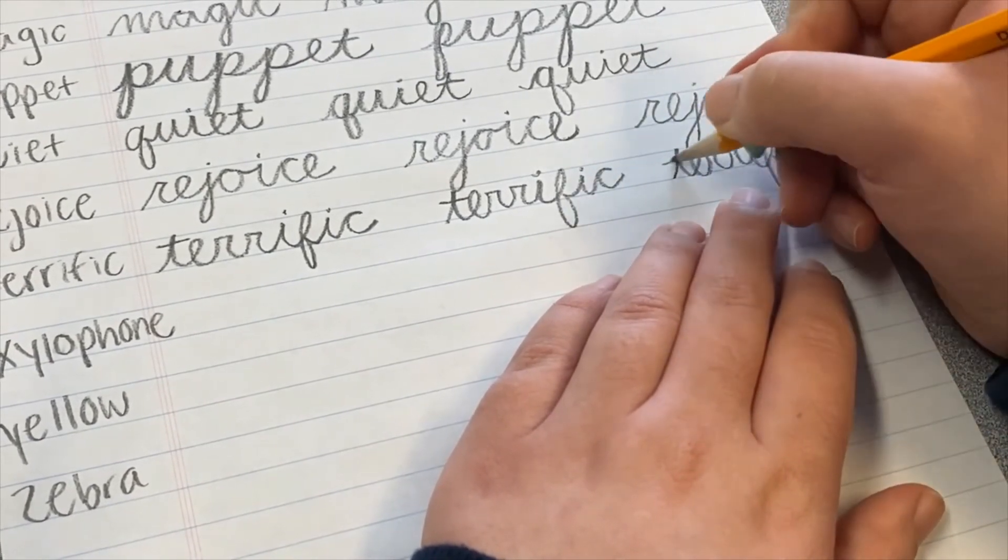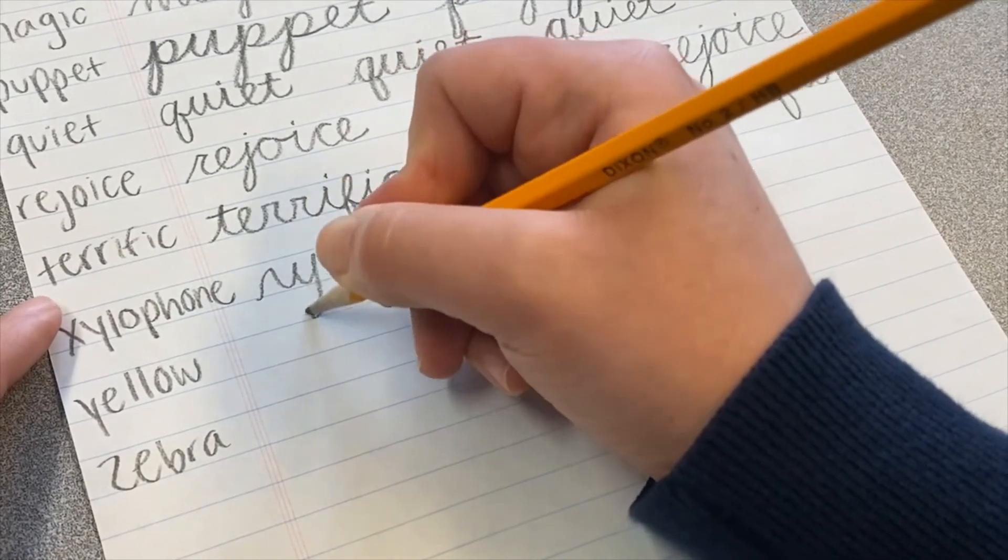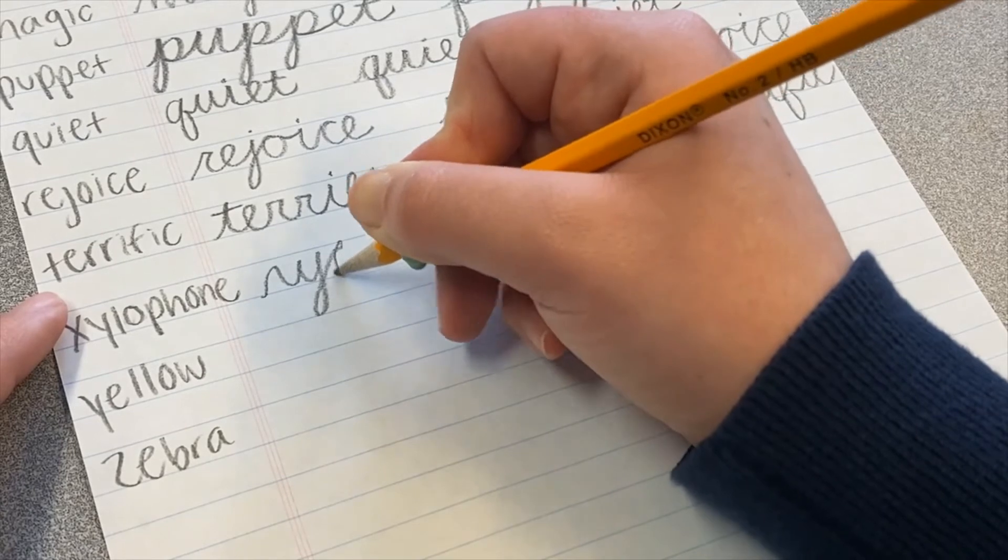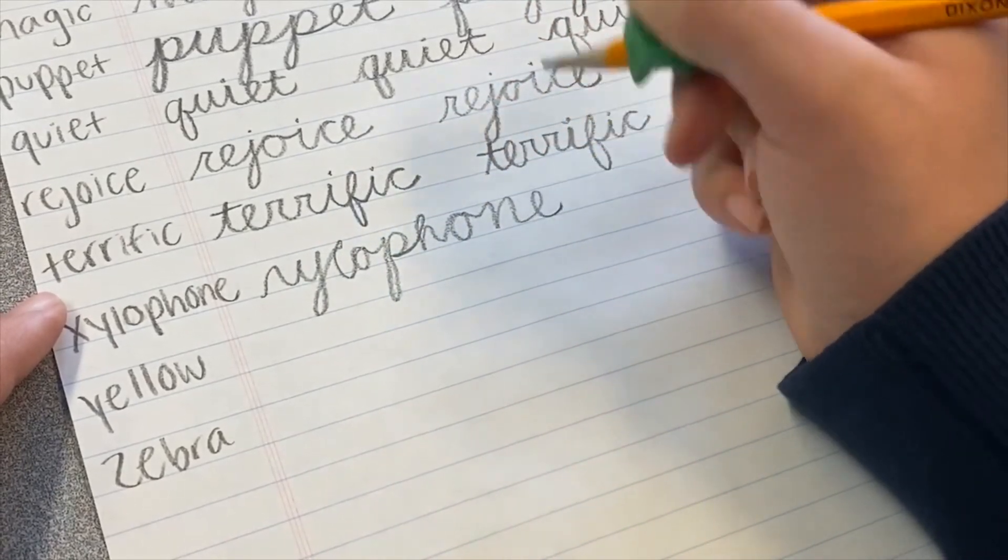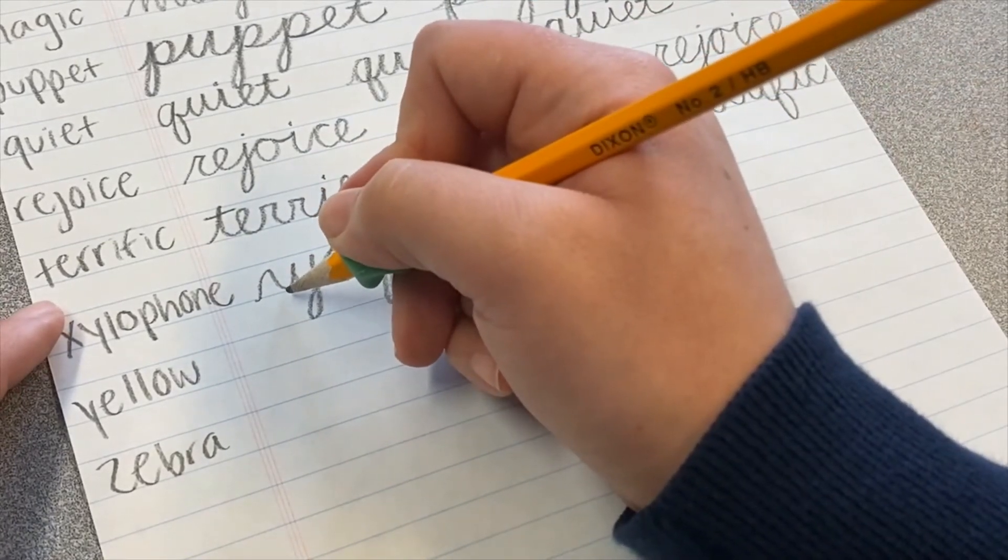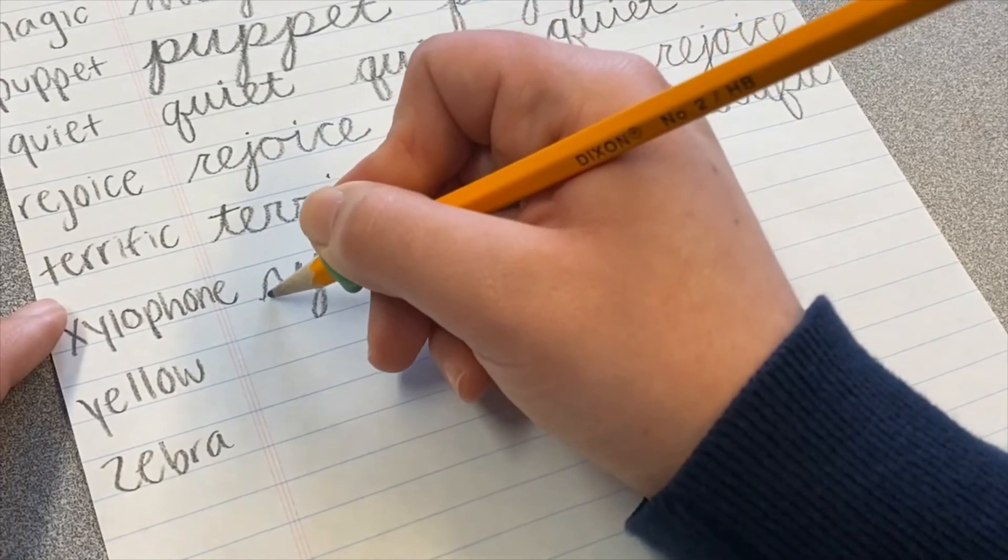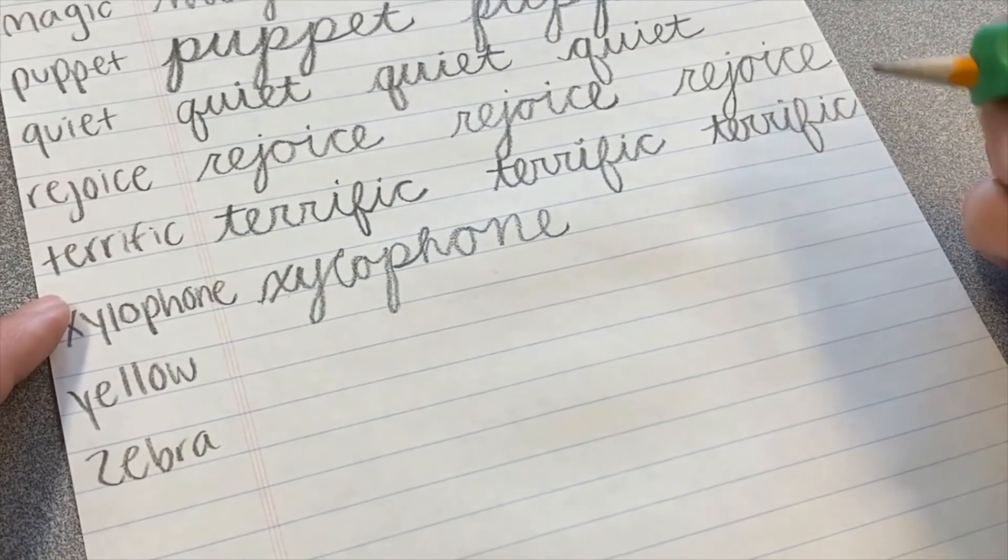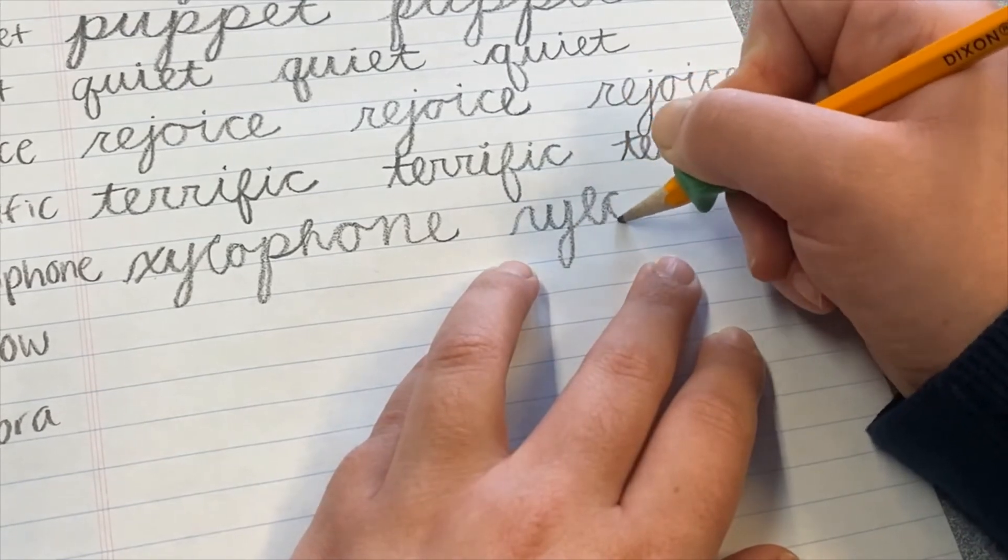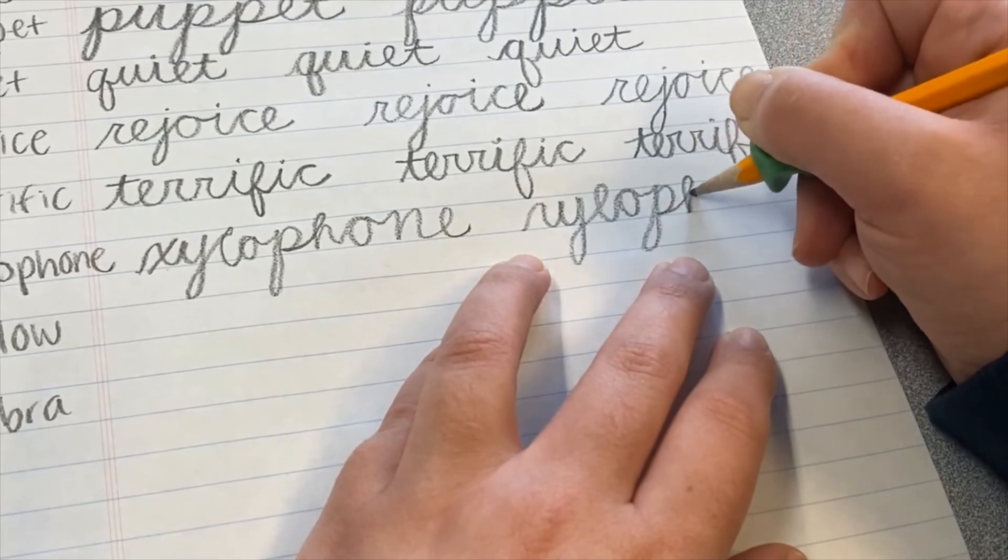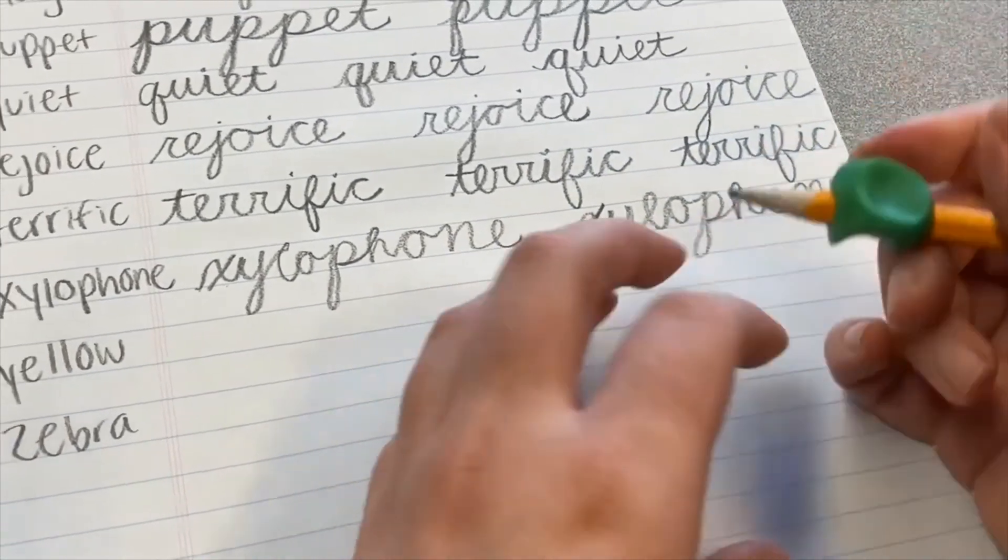It's important to practice writing as many different words as you can. You definitely want to make sure you practice writing your name. X, Y, L, O, P, H, O, N, E. And you'll notice that I did not put the other diagonal line to the X. I just made the first part of the X and then I kept going right into my Y. So now I'll come back and I'll put the line in my X. So again, xylophone. X, Y, L, O, P, H, O, N, E. And then I put my diagonal line through for xylophone.